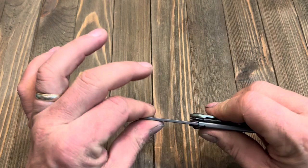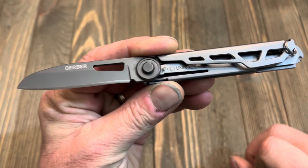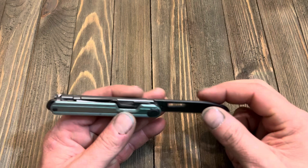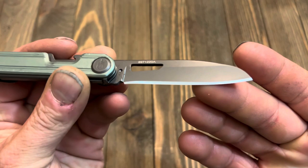It does have a liner lock blade. It's got what they call a modified sheep's foot blade. The blade itself is two and a half inches long. As you see, it's just nice.